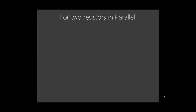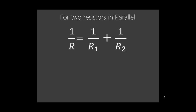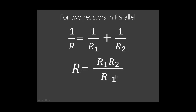For two resistors in parallel, there is a special case. Starting from 1/R = 1/R1 + 1/R2, we can simplify to: R = (R1 × R2) / (R1 + R2), commonly called 'product over sum.' If you have two resistances in parallel, multiply them and divide by their sum to get the effective resistance.